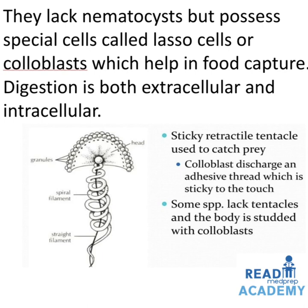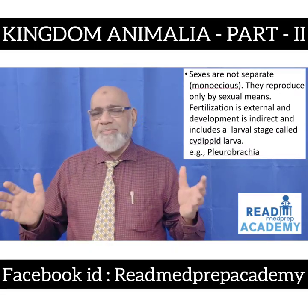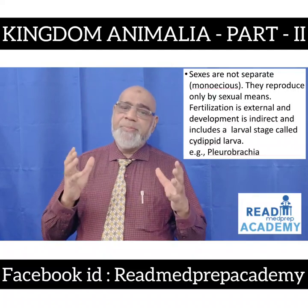They lack nematocysts but possess special cells called lasso cells or colloblasts, which help in food capture. Digestion is both extracellular and intracellular. In the image below you can see on the left side the head, granules, spiral filament, and straight filament; it has a sticky retractile tentacle used to catch prey. Colloblasts discharge an adhesive thread which is sticky to touch. Some species lack tentacles and the body is studded with colloblasts.